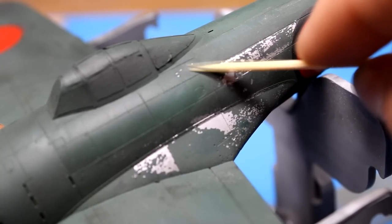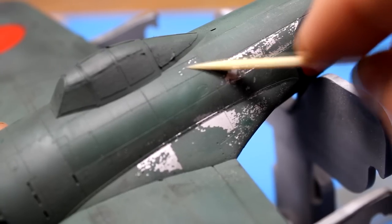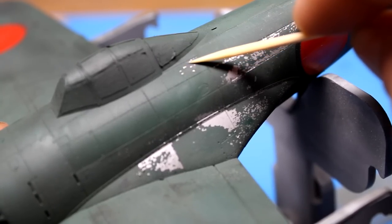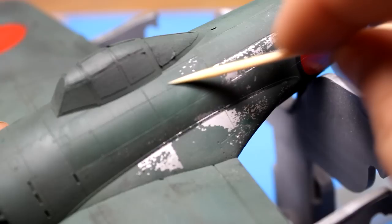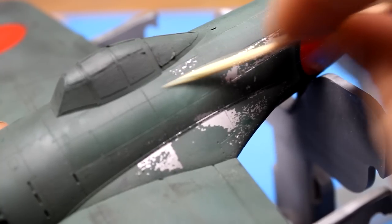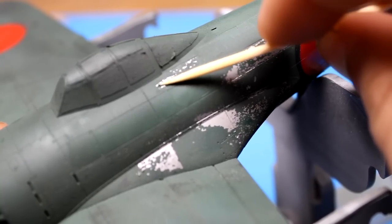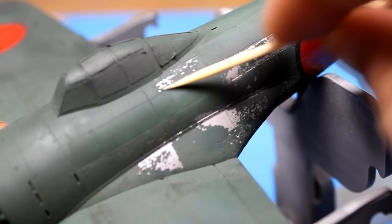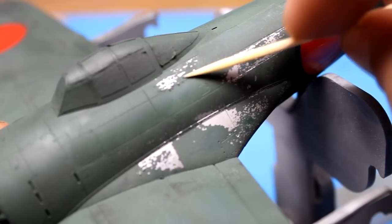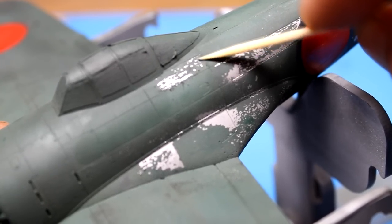To get the larger areas of chipped paint, I would use a toothpick. Because the wood was soft enough, it would not damage the aluminum paint underneath, but it would allow me to pick off the acrylic paint quite easily. And it would start with small chips, and that could gradually build up to bigger chips, to starting to tear off chunks of the paint. I found this was the easiest method to get chips and areas to match the references.